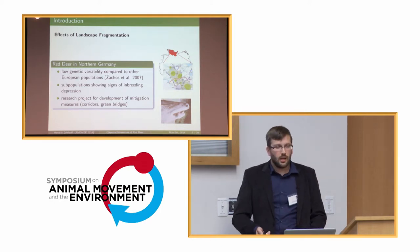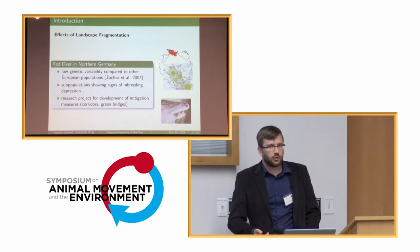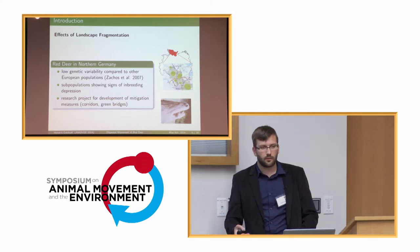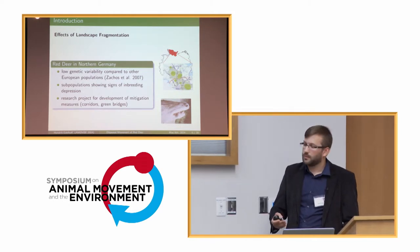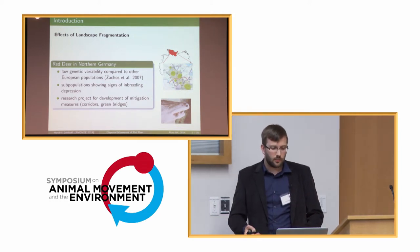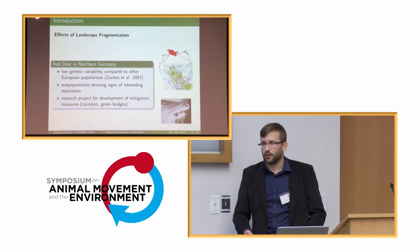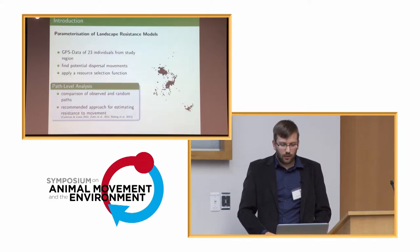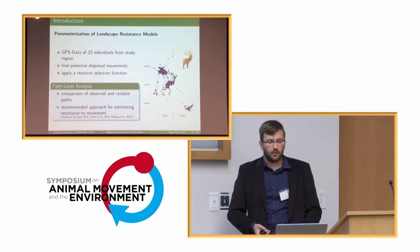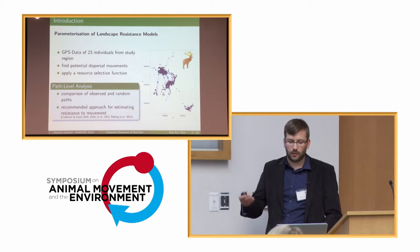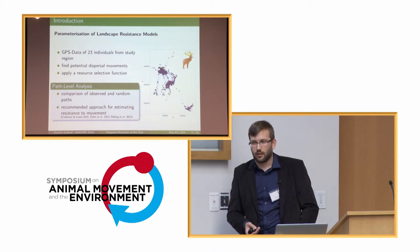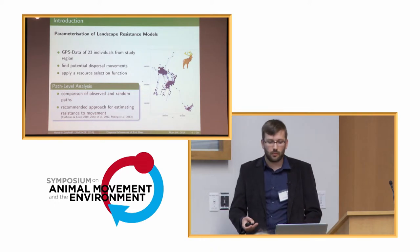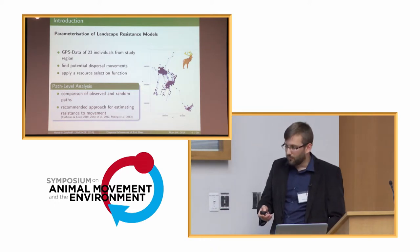Therefore, a research project was started to find or develop mitigation measures like corridors promoting dispersal movements between populations, or identifying good spots for green bridges or wildlife crossings in areas of road conflict. Throughout this project, we obtained GPS relocation data from 23 individuals across the region — over 85,000 relocations in total.